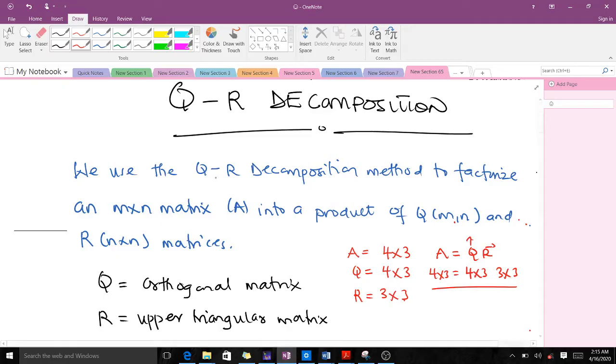We use the QR decomposition method to factorize an n by n matrix into a product of Q, which is also n by n, and R, which is n by n. Q is always an orthogonal matrix and R is an upper triangular matrix. The columns of our Q matrix are orthogonal to each other.